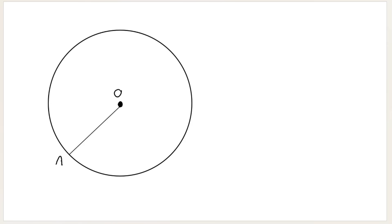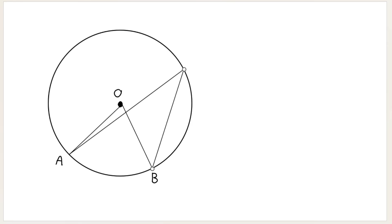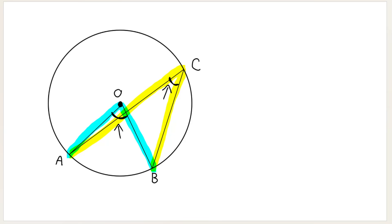Let's start again at the center — let's call this A and this B. Now instead of connecting up here like before, I'm going to take this line and go a different way, attaching to point C down here. The angle at the center is the one formed by lines from O. The angle at the circumference is formed on the circumference. Both angles come from the same points A and B.